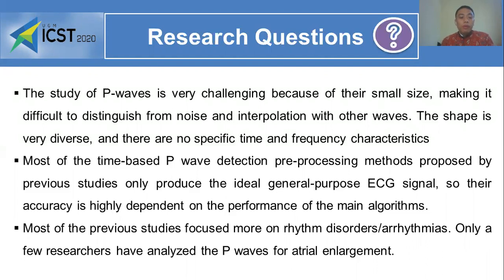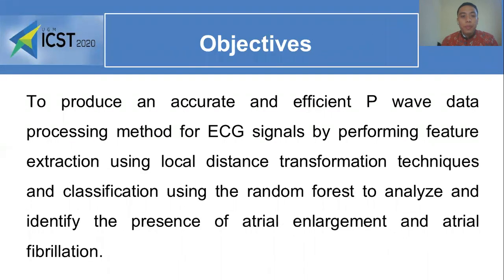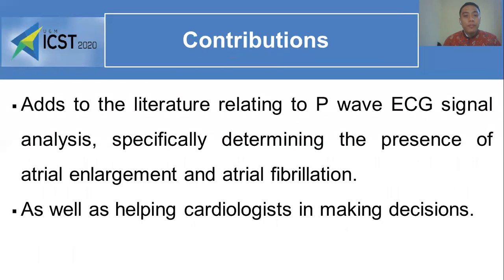Most previous studies focused more on rhythm disorders or arrhythmias; only a few researchers have analyzed P-wave morphology. The objective of this research is to produce an accurate and efficient ECG data processing method by performing feature extraction using local function transformation techniques and classification using random forest, to analyze and identify the presence of atrial enlargement and atrial fibrillation. The contribution of this research is to add to the literature on ECG signal analysis, specifically helping cardiologists in making decisions.